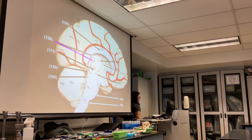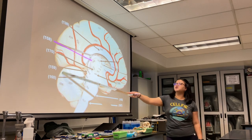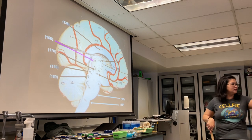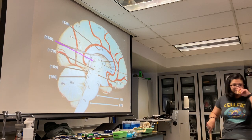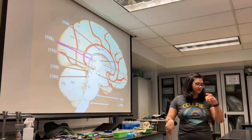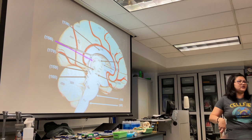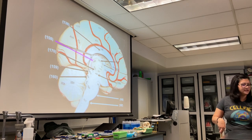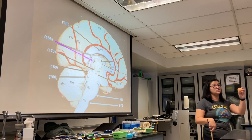Let's look at the cerebellum. Notice how it's very highly folded compared to the cerebrum — the folds of the cerebellum are much smaller and a lot more numerous. That's the reason why it's going to have a lot more neurons.